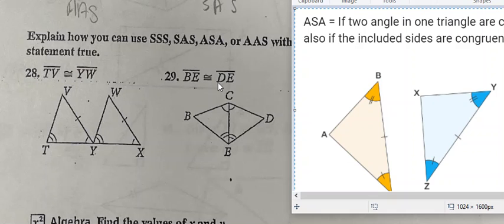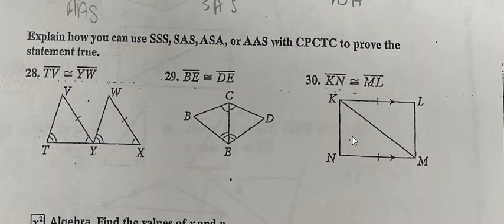So this third one shows that KN is congruent with ML. But we're also kind of told that it looks like this: KL and NM are sharing the same side as well as being congruent. So technically, we already have two sides of each of the triangles that are congruent to each other.